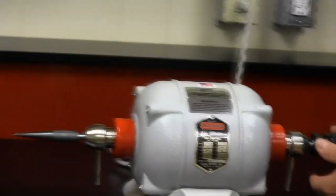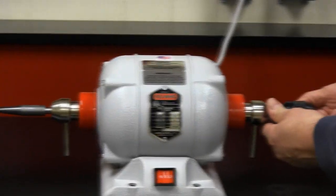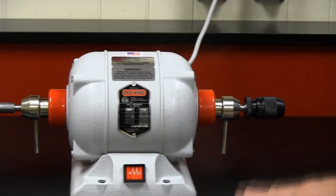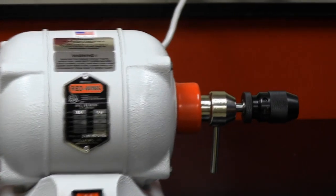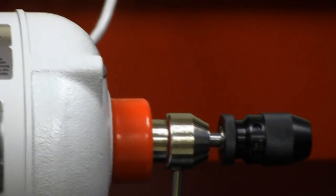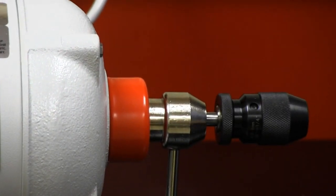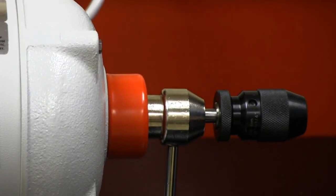The Atlas chuck opens and closes manually and can hold burrs up to a quarter inch in shank. So it'll hold all the standard application burrs that are used in various fields: dentistry, jewelry, industrial, hobby, craft, etc.